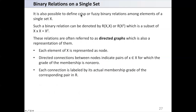It is also possible to define crisp or fuzzy binary relations among elements of a single set X. Such a binary relation can be denoted as a relation on X×X, which is a subset of the Cartesian product X², in the classical sense. These relations are often referred to as directed graphs. Each element of X is represented as a node, and directed connections between nodes indicate pairs in the reference set X for which the membership grade is non-zero.